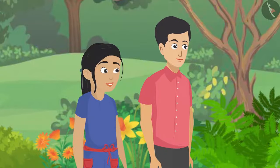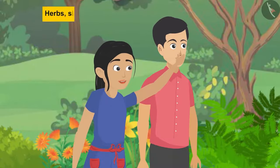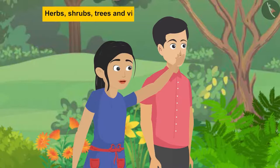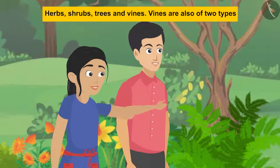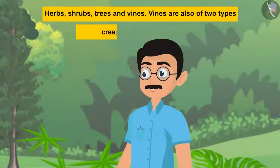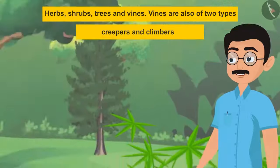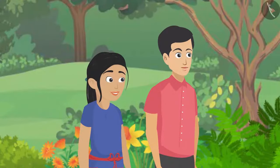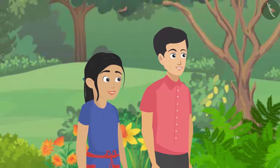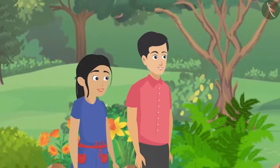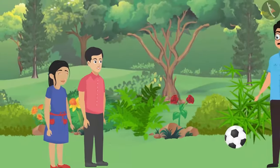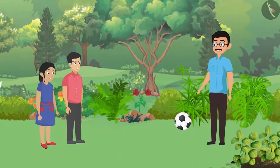Father mentioned that they were taught the previous day that there are four types of plants. He listed them: herbs, shrubs, trees, and vines — and vines are also of two types: creepers and climbers. He then suggested that Pankaj and Pushpa each explain some types of plants so both of them can understand and remember better.